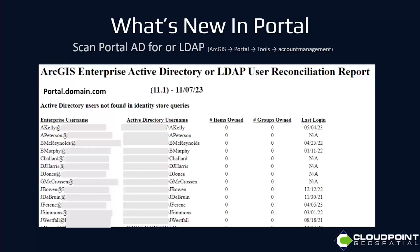This is one I've found very helpful, especially for admins with lots of users — it's for AD and LDAP. You find it on the machine where portal is installed, in Program Files, ArcGIS Portal Tools, Account Management. It will look at any Active Directory users that are no longer in Active Directory, let you know if they own items or groups so you can remove or transfer those, and remove those people from your organization. It even gives you their last login, produces a nice report with two text files: one showing all users, another showing users with items that need to be removed.